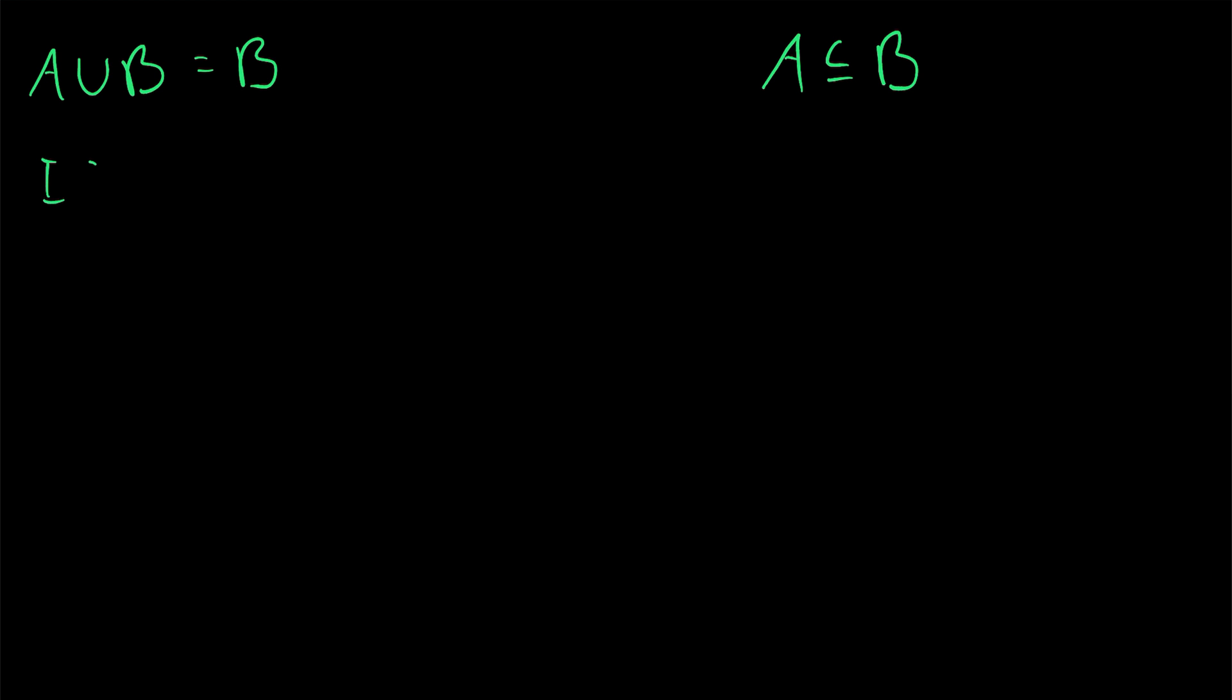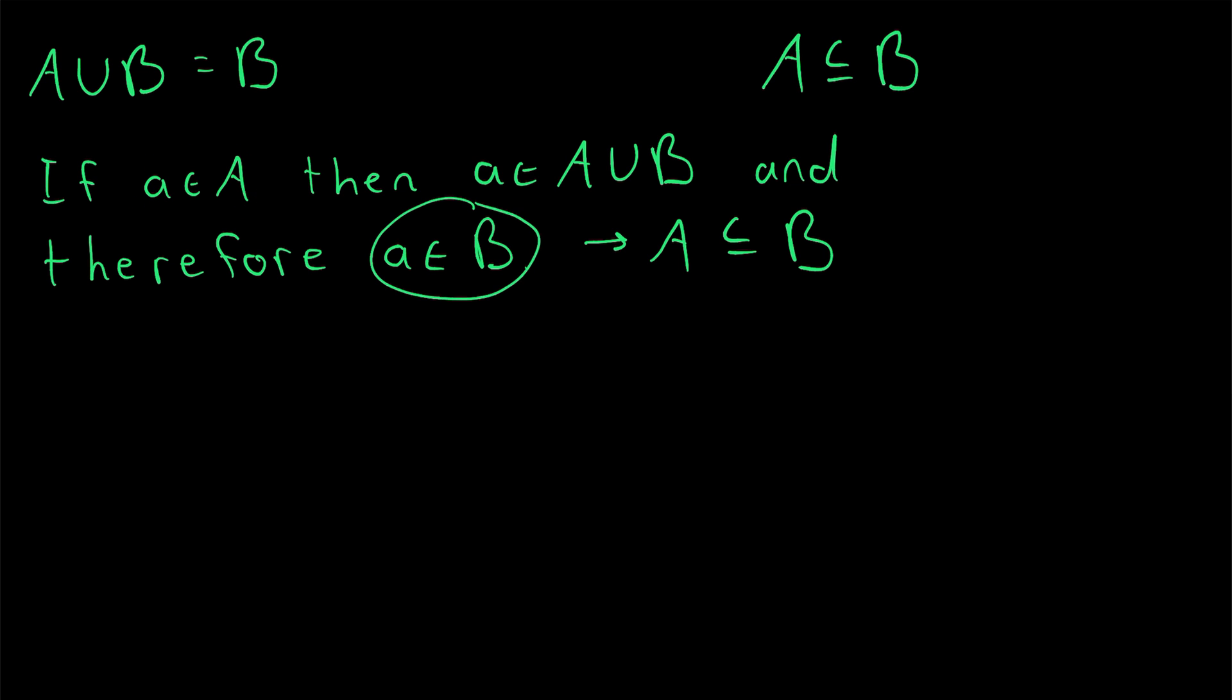So we begin by taking an element of A. If little a is an element of the set A, then by definition of set union, a must also be an element of the set A union B. And then we very quickly arrive at our result. Since a is an element of A union B, and A union B is equal to the set B, we know that a must also be an element of B. And therefore, the set A is a subset of B, because all elements of A are also elements of B.